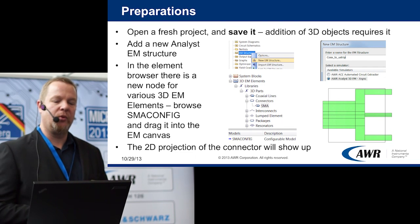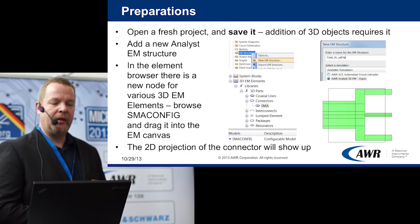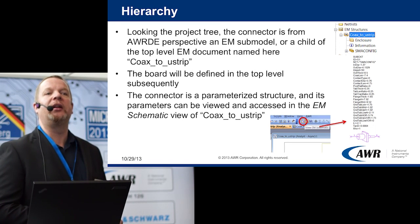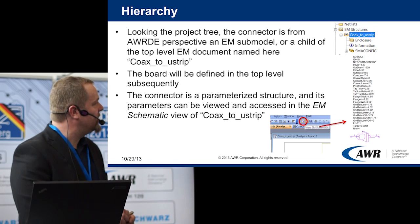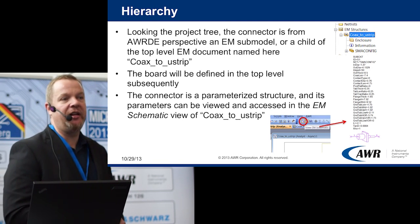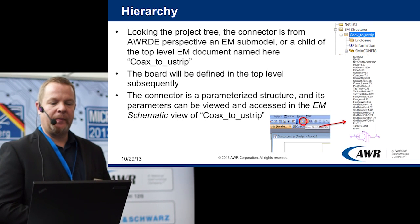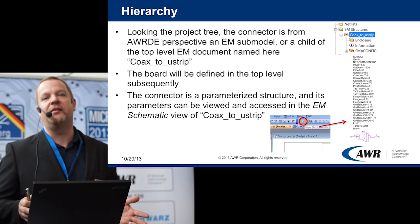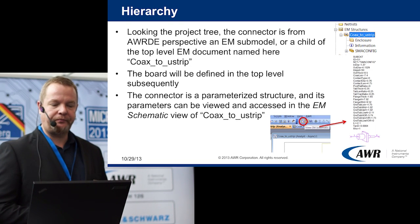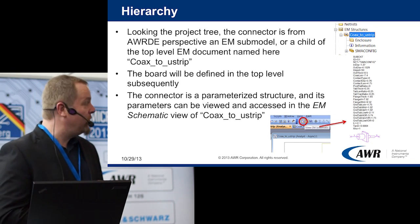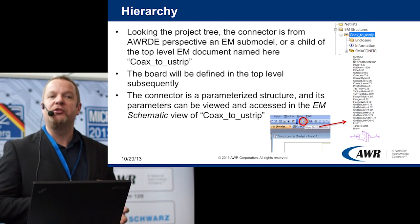The 2D projection of the connector will show up. If we look at the project tree, at the moment we introduce this connector model into the project, it appears as a sub-model in the EM hierarchy — or we can say the connector is a child of the top-level EM document. The top-level document is now called coax to microstrip, and it essentially contains the planar part of the design, the board itself. The connector model is a parametrized EM object with quite a few parameters that affect the actual geometry of the connector.